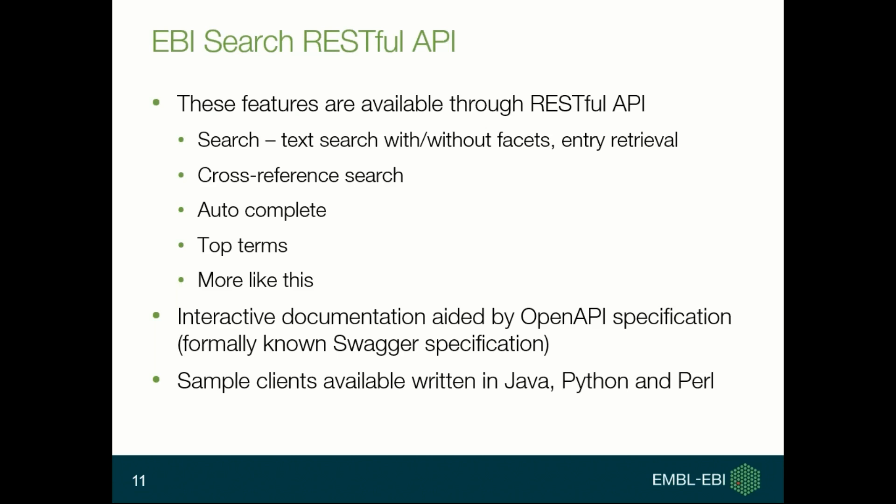We have interactive documentation about our APIs, meaning you can find all the information you need when using EBI search APIs. You can also make test calls directly on the same page to see the results. From the documentation page, you can download sample clients written in Java, Python, and Perl.